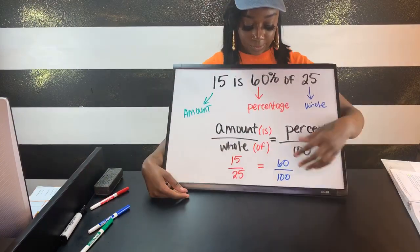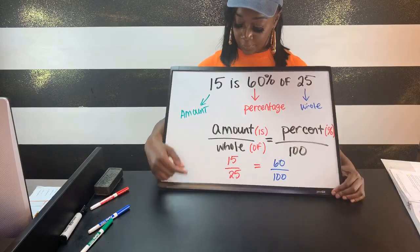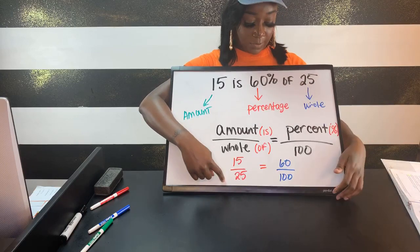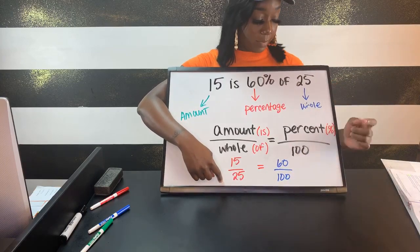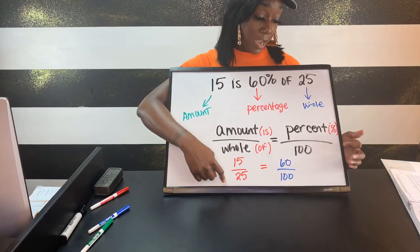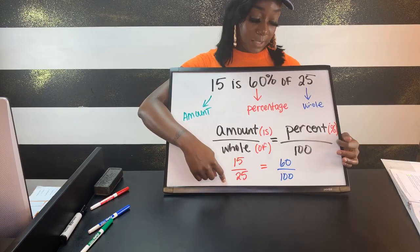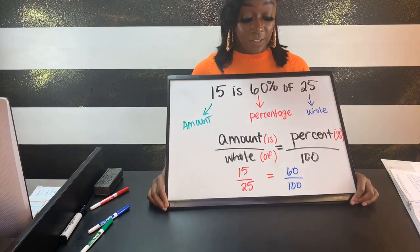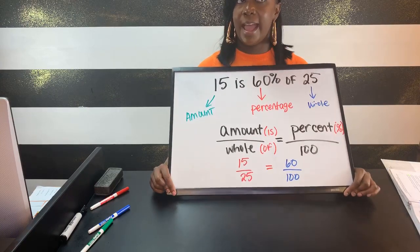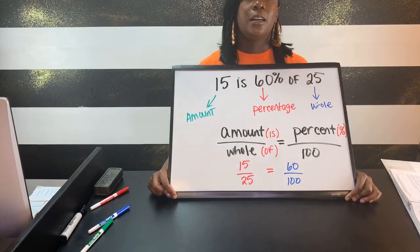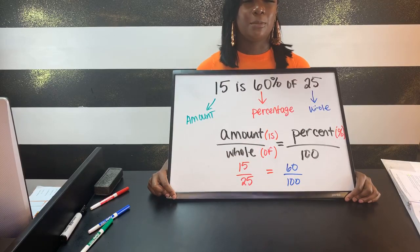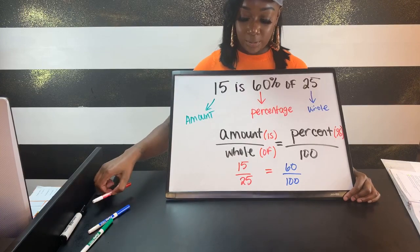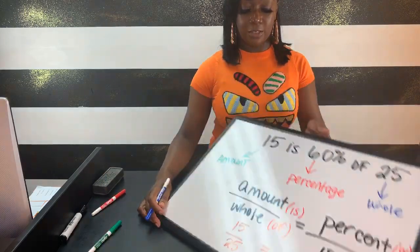15 is our amount — it comes before the word 'is.' 25 is our whole — it comes after the word 'of.' 60 is our percentage, placed over 100, which automatically removes the percent sign. To check if you've done it correctly, we cross multiply. Cross multiplying means you multiply top to bottom on both sides to make sure they're equal — a skill we used in ratios and proportions.